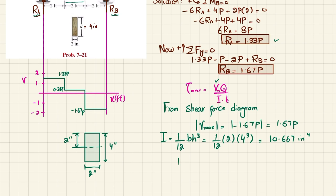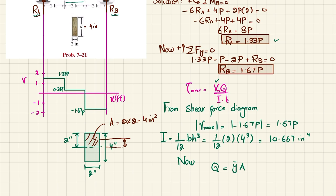Now calculate Q. Q equals y-bar times A. Taking the upper half of the cross-section, the area A equals 2 times 2, which is 4 square inches. The y-bar is the distance from the neutral axis to the mid-point of this half-section, which equals 2 divided by 2, that is 1 inch. So Q equals 1 inch times 4 square inches, giving Q equals 4 cubic inches.